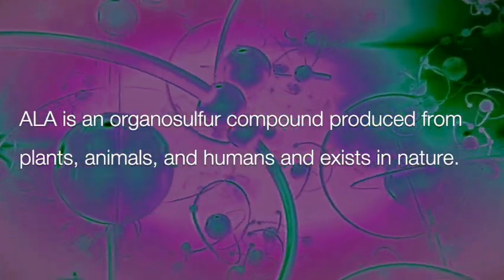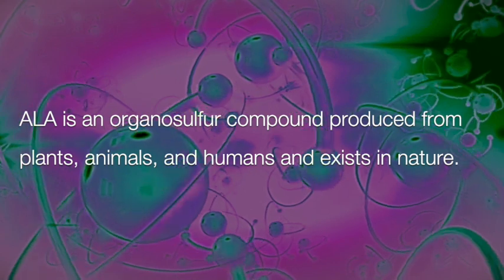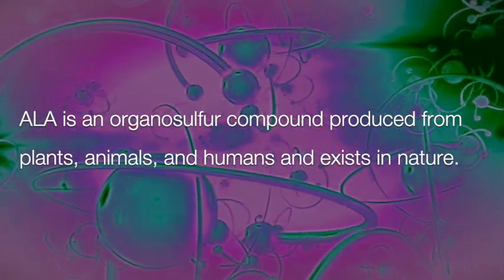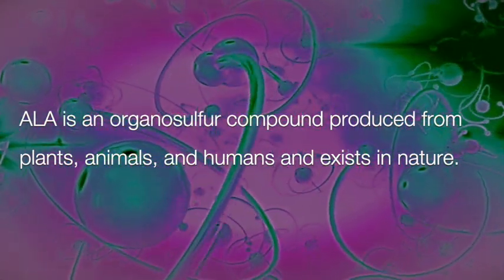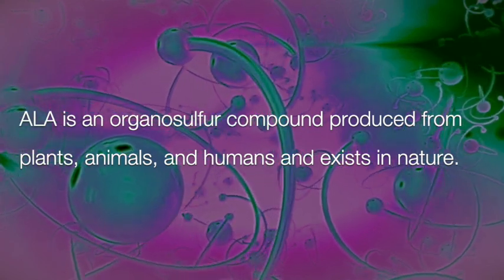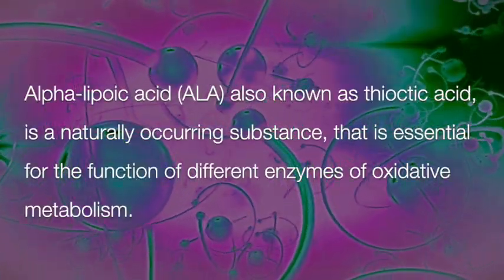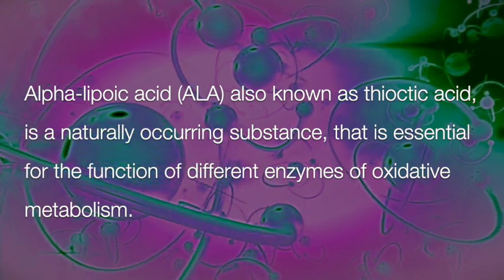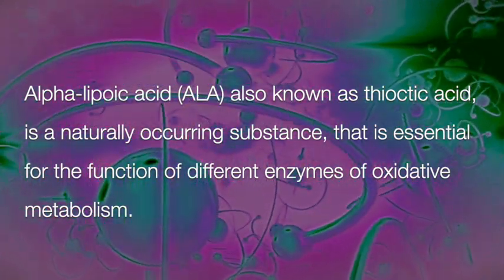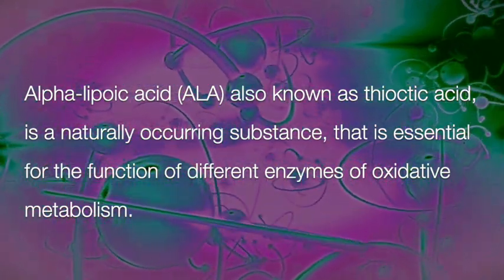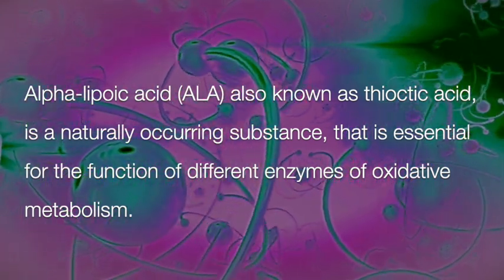Alpha Lipoic Acid, or ALA, is an organosulphur compound produced from plants, animals, and humans and exists in nature. ALA is also known as thiotic acid and it is essential for the function of several enzymes of oxidative metabolism.